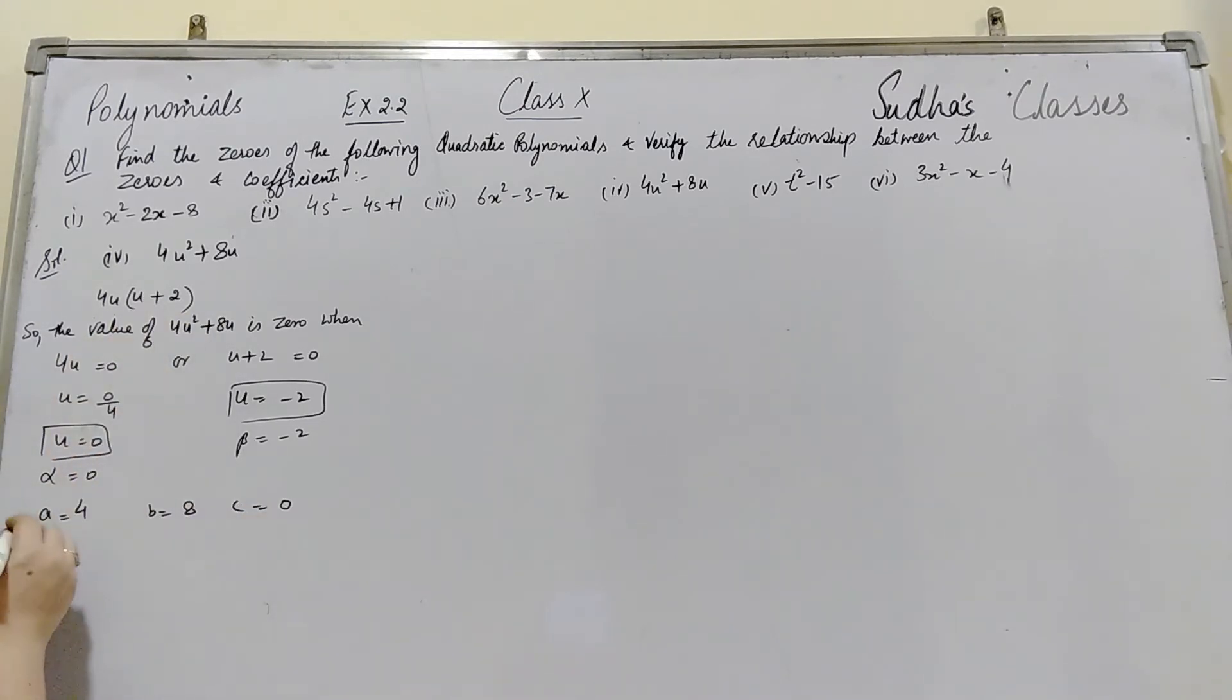To verify, we will find the sum of zeros: alpha + beta = -b/a. Alpha = 0, beta = -2, b = 8, and a = 4. So 0 + (-2) = -8/4. When we solve this: -2 = -2. These two are equal.